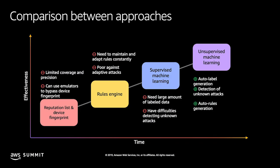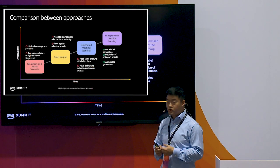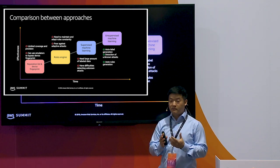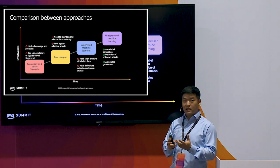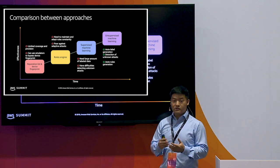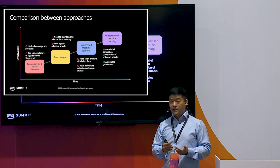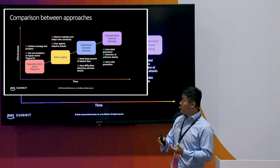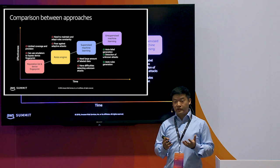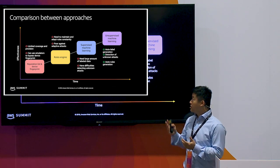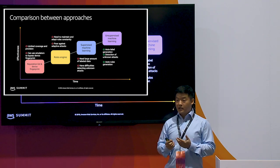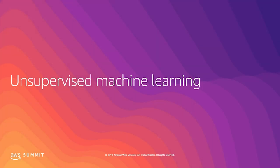Here is the brief comparison among all the approaches. Device fingerprint is a very static approach with very limited detection coverage. Rules engine is a step up but painful to maintain. SML is another step up but its biggest drawback comes from training data quantity and quality. Finally, unsupervised machine learning is what we believe to be the future of machine learning, but it is computationally expensive and quite challenging to tune.